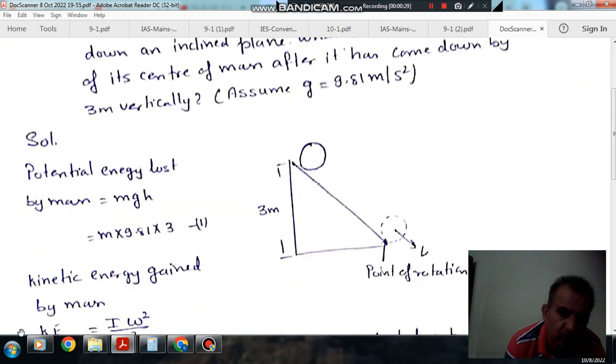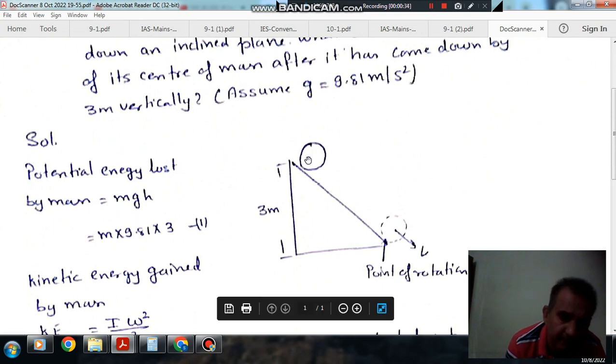This is your solid cylinder and it comes down vertically by 3 meters when it rolls down an inclined plane. At the downward position, v is the velocity of the center. As it is rolling, this is the point of rotation.